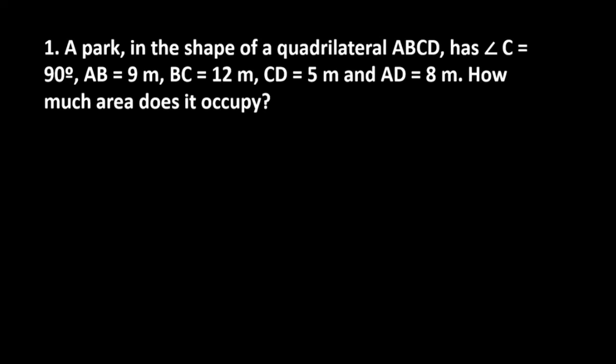How much area does it occupy? We have a quadrilateral and we're given that angle C is 90 degrees. AB is 9 meters, BC is 12 meters, CD is 5 meters, AD is 8 meters. We can connect D to B.